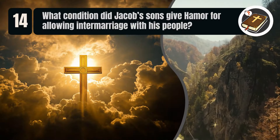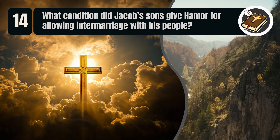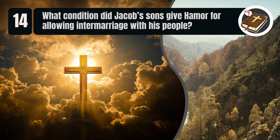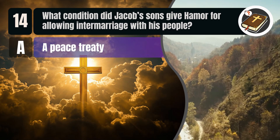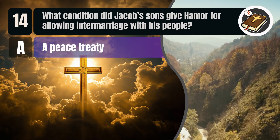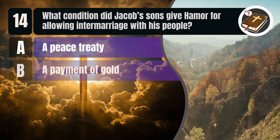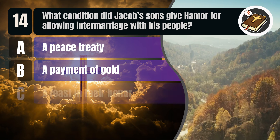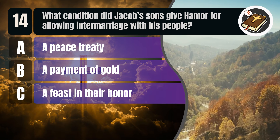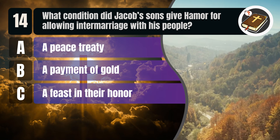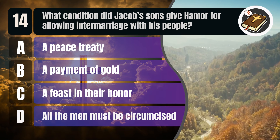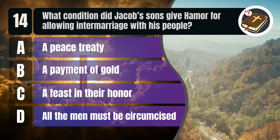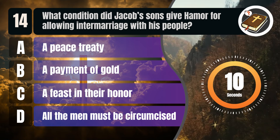Question 14. What condition did Jacob's sons give Hamor for allowing intermarriage with his people? A. A peace treaty. B. A payment of gold. C. A feast in their honor. D. All the men must be circumcised.